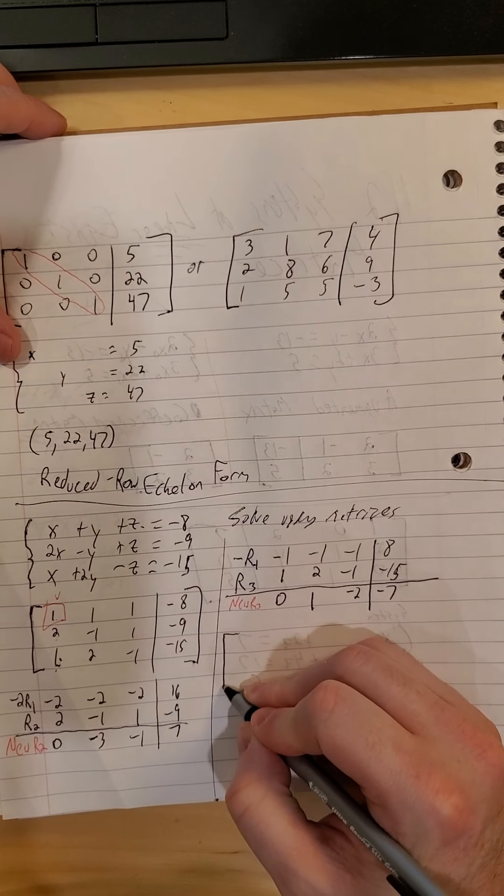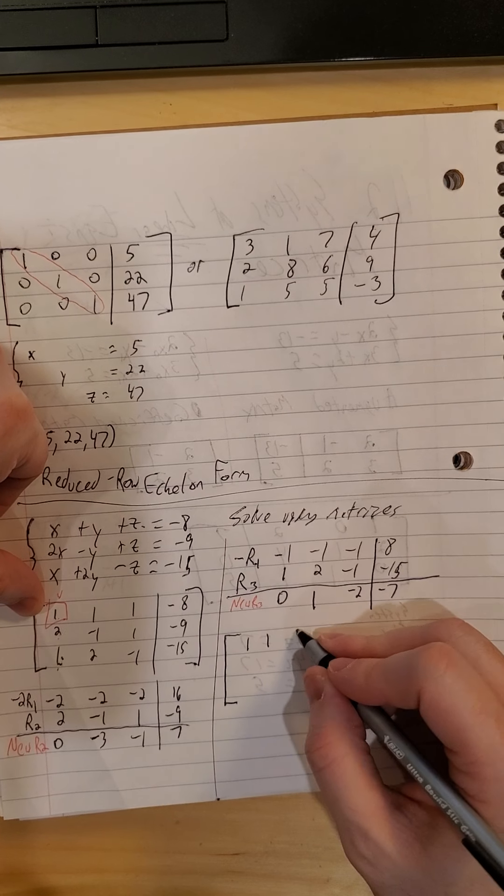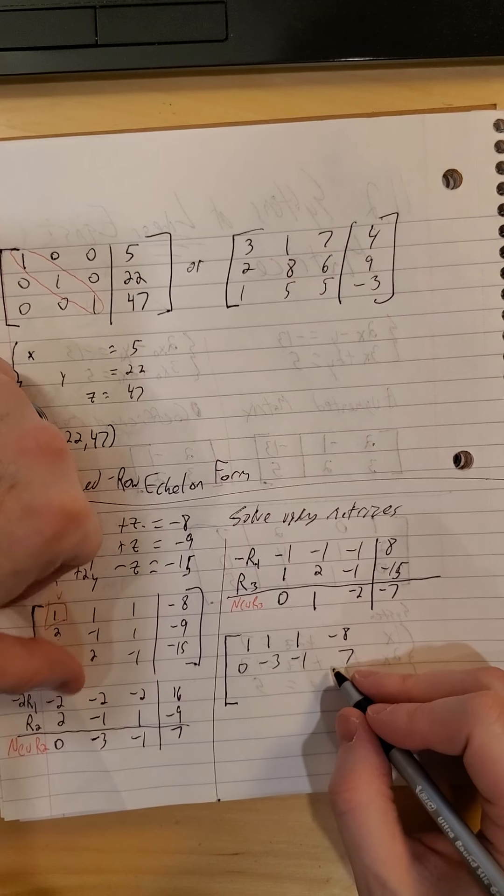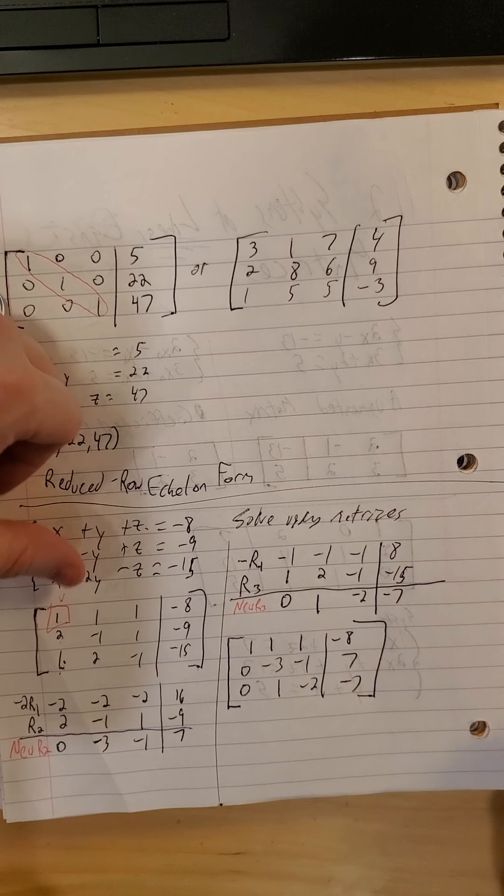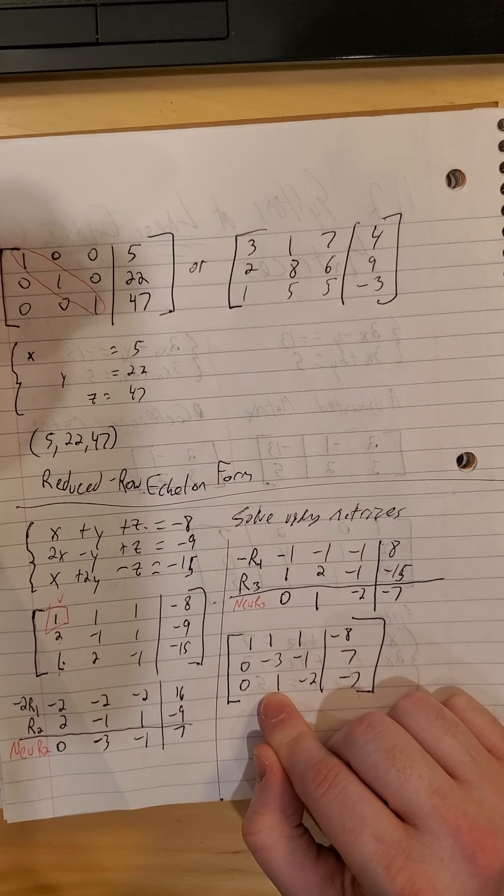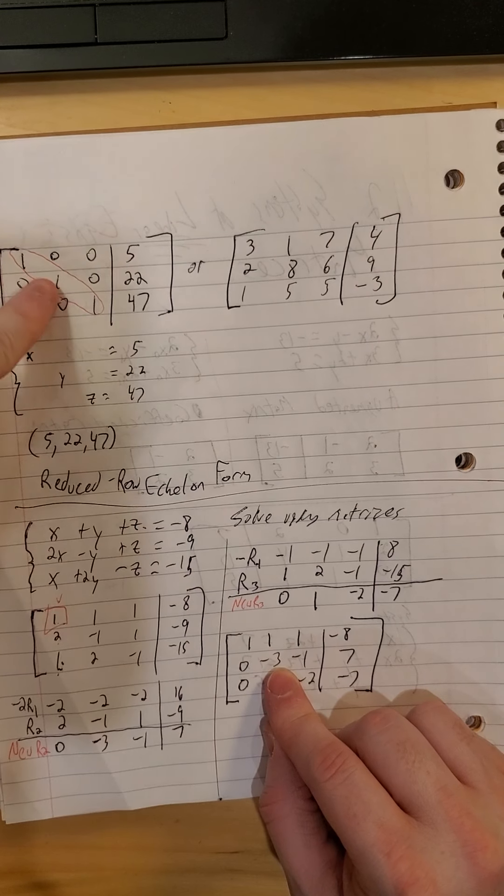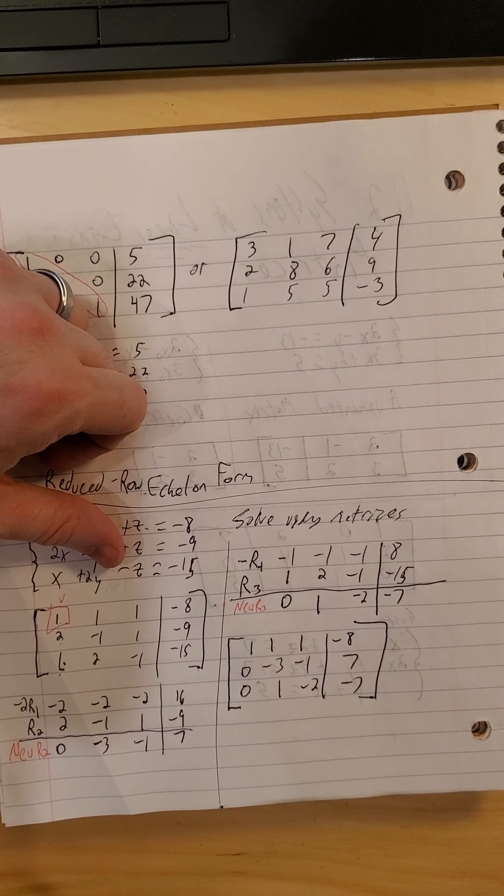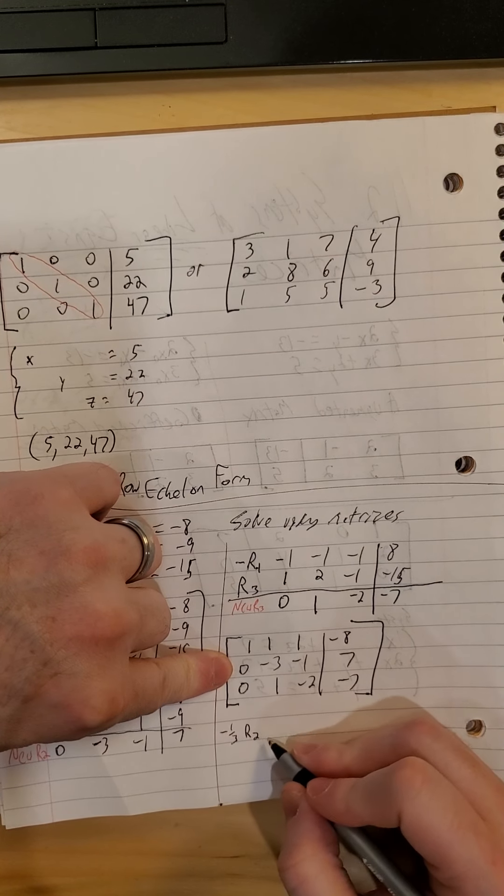So my new matrix, column 1 looks the way we want it to look. So row 1, I kept it as it was for the moment. New row 2, 0, negative 3, negative 1, positive 7. And new row 3, 0, 1, negative 2, negative 7. So then the goal is keep doing that one column at a time. So now I'm looking to turn this next item on the diagonal into a 1. So we'll do negative 1 third of both sides of row 2.